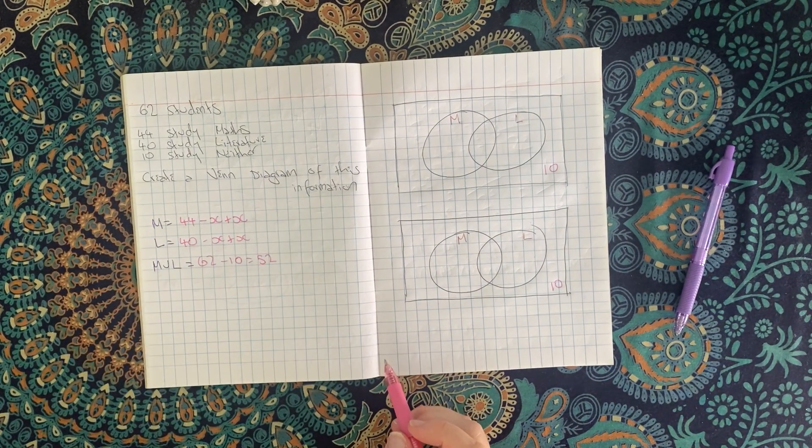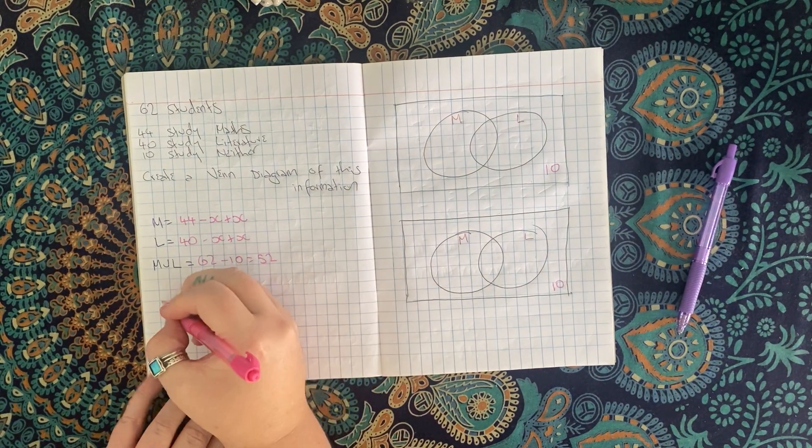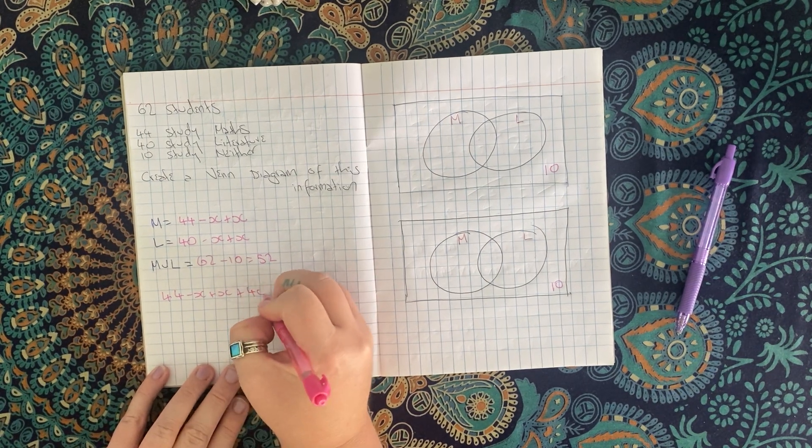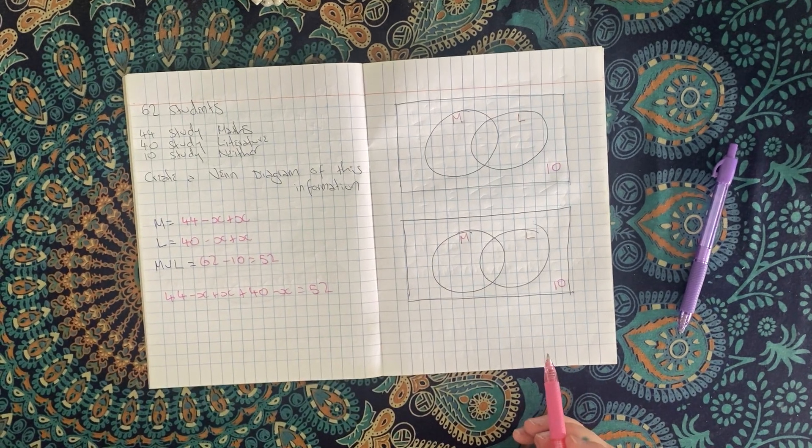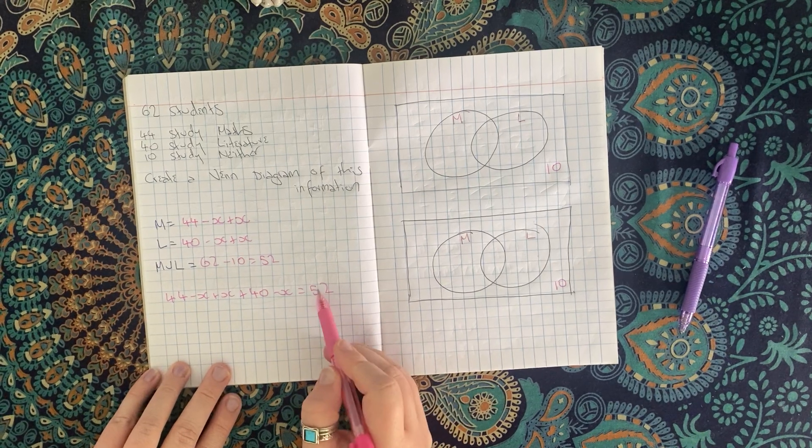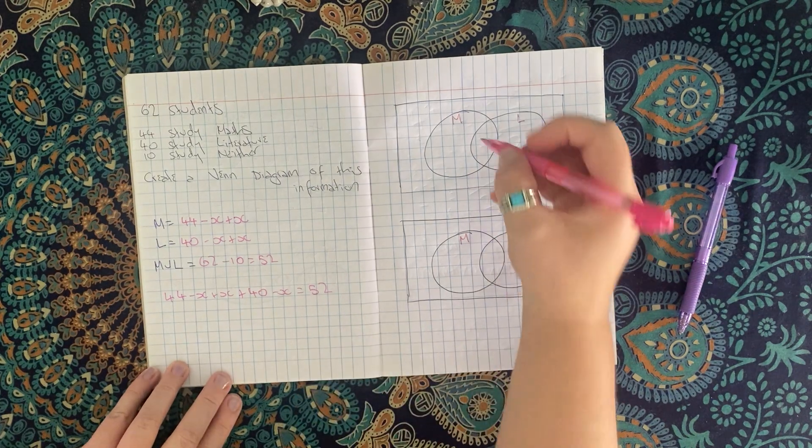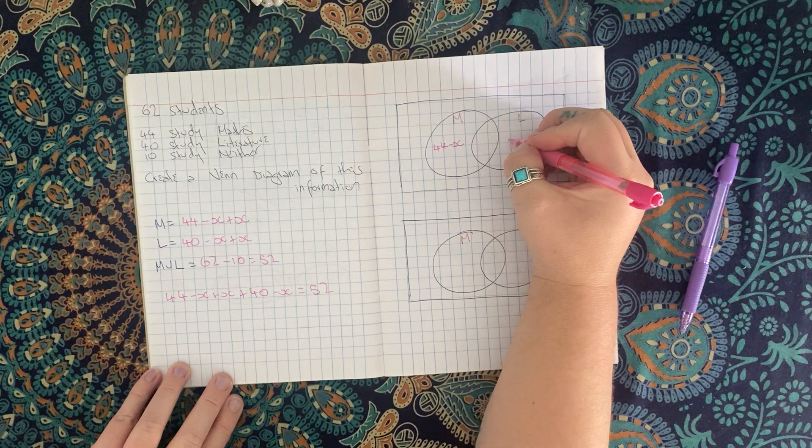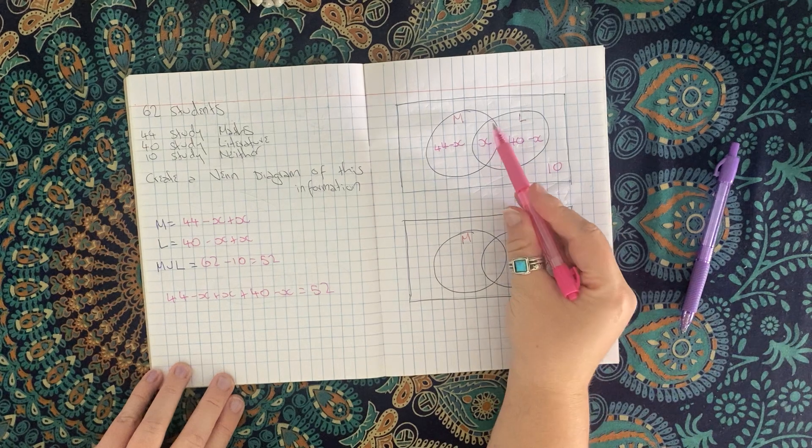Now you'll notice that I haven't written them out in full. So let me explain what this line looks like. I know that there are 52 students altogether, so that bit's easy. I can make it equal 52, but what I'm doing is saying that this section here is 44 minus X and this section here is 40 minus X. And then this section here is X, right? This is my unknown intersection. So this bit here is 44 minus whatever this is, and this bit here is 40 minus whatever this is, because altogether we want 40 and altogether we want 44.